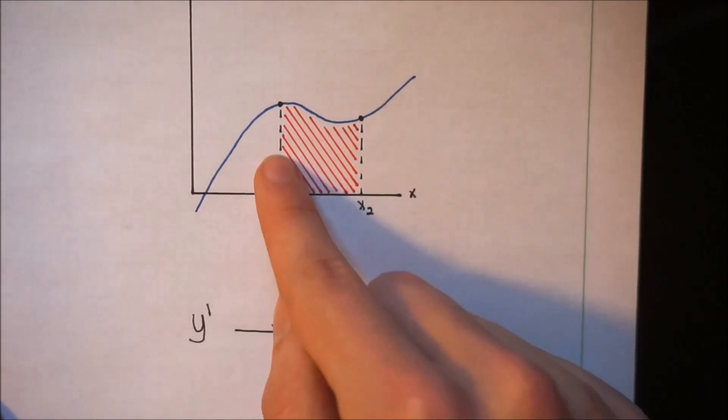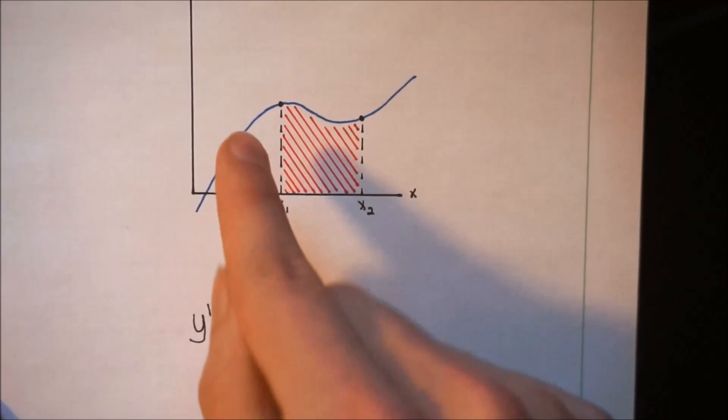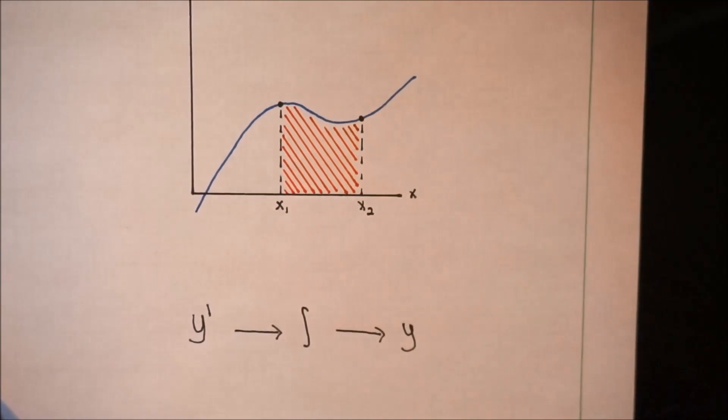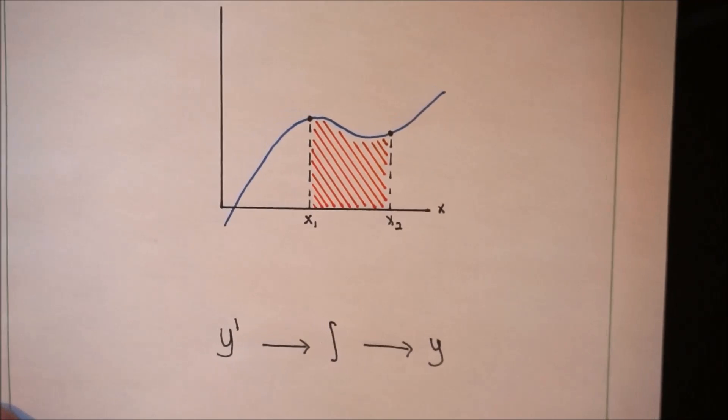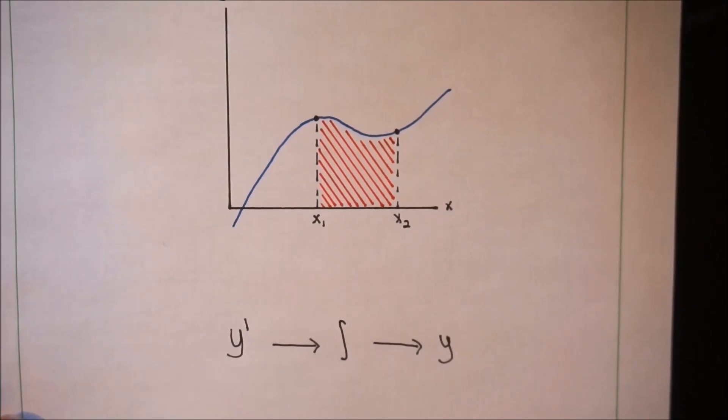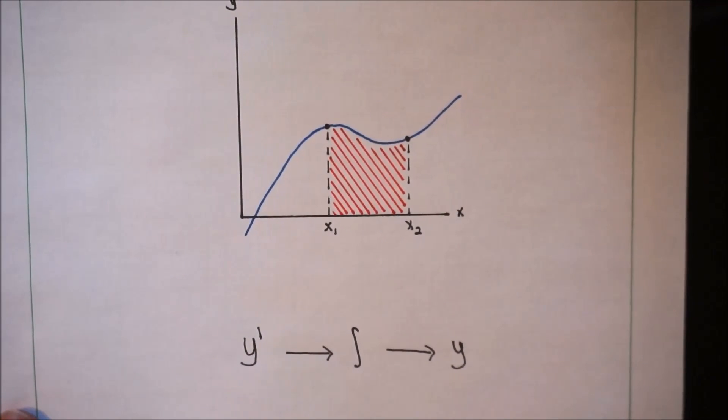Of course, you could just draw a little grid in here, add up all the little rectangles, find the area that way. But let's say you're building a rocket ship or something. You kind of want to be accurate. You want to know if you're going to hit the moon or not.